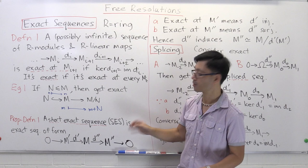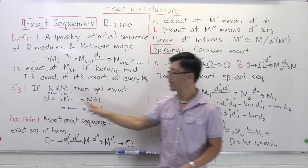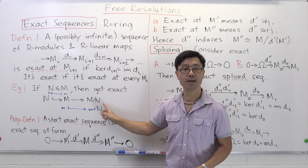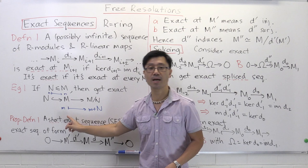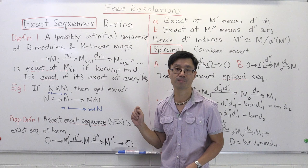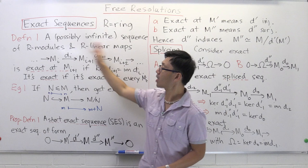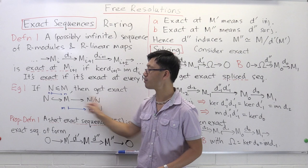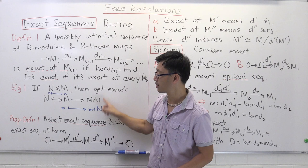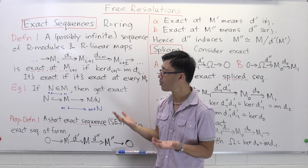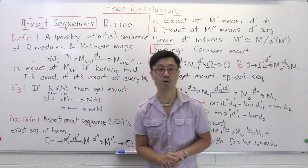Let me give the stereotypical example. Suppose we have a module M and a submodule N. We get a three-term exact sequence with modules N, M, and the quotient M/N, where the maps are the inclusion map from N into M, and the quotient map from M to M/N sending any element m to its coset. To check exactness at the middle module M, we check that the kernel of the quotient map equals the image of the inclusion map. The kernel of the quotient map is exactly N, which is the image of the inclusion, so this is exact.